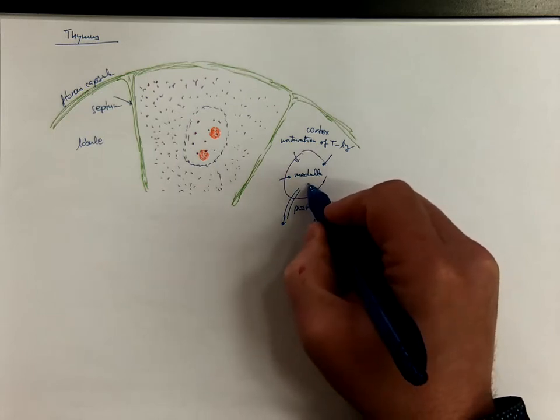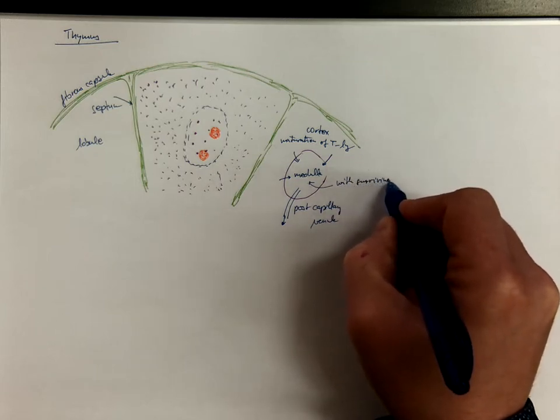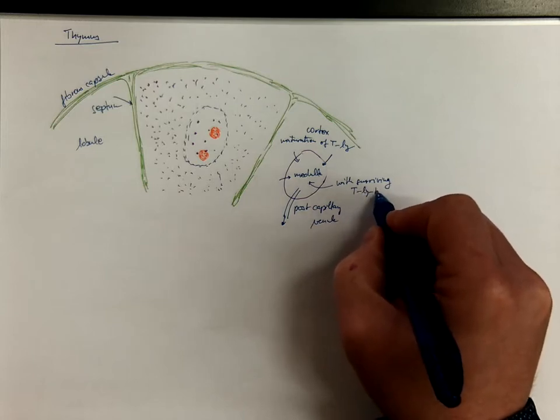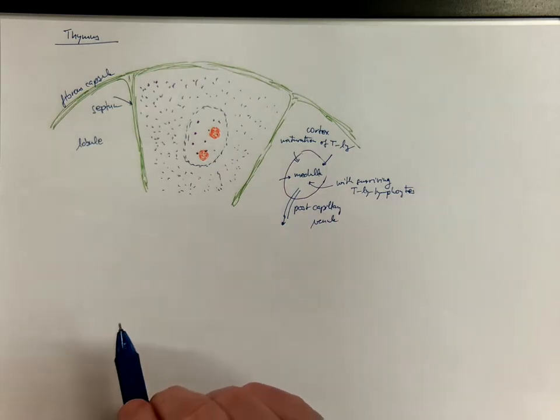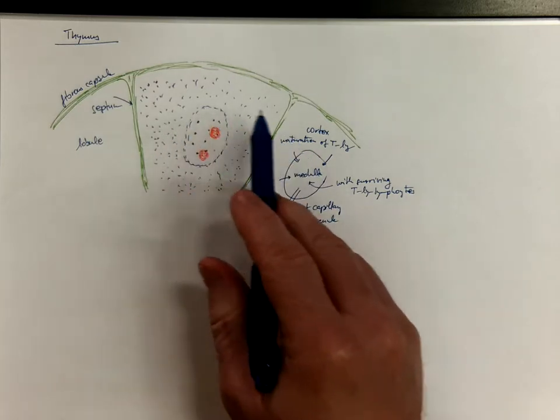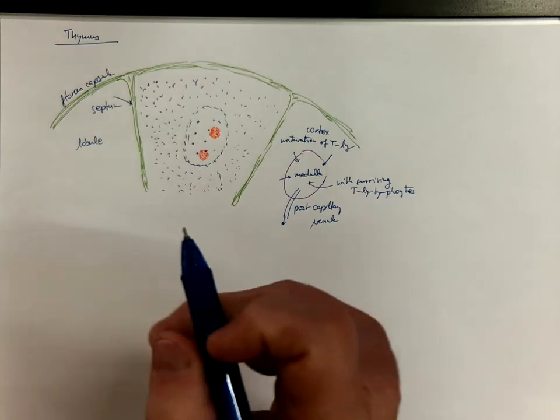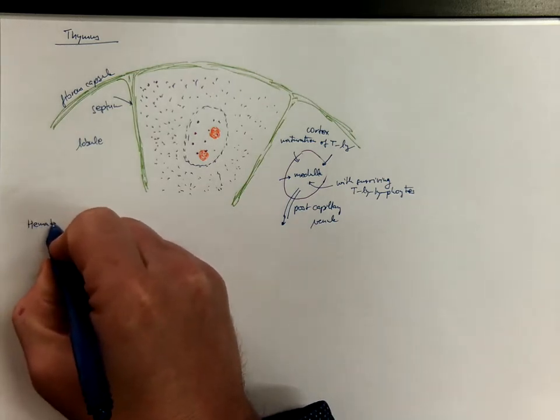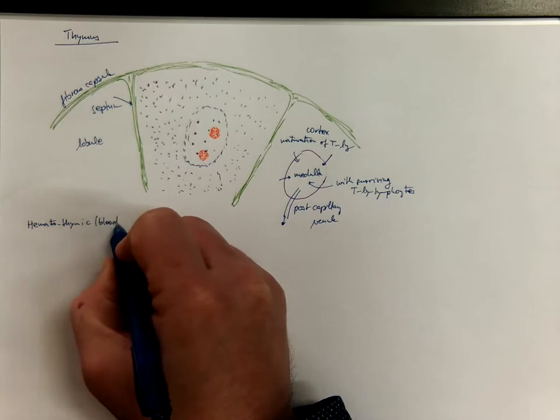The surviving T lymphocytes are drained via a post capillary venule into the blood. The tissue skeleton of the thymus is made of reticular epithelium, not reticuloconnective tissue like in other lymphoid organs. In cortex there is a hematothymic barrier or blood-thymus barrier.